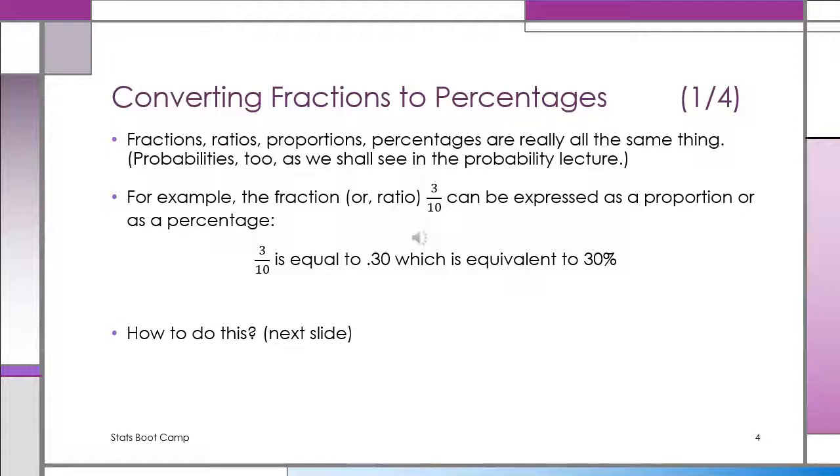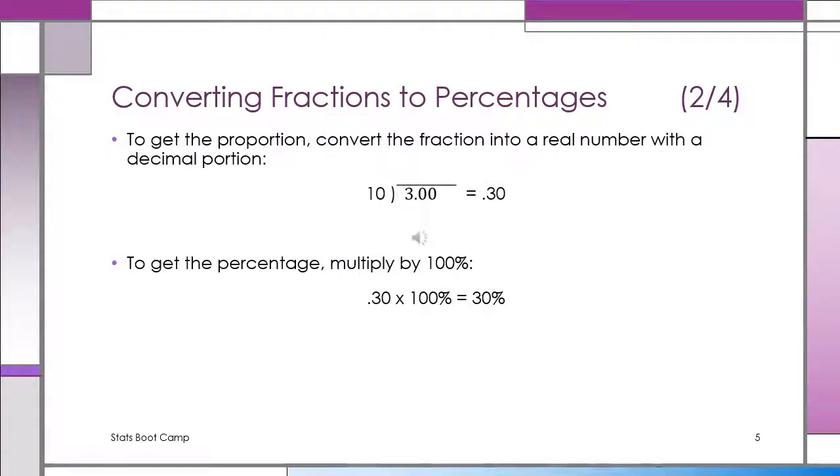In this slide you see that the fraction 3/10 is the same as 0.3, 0.30, and which is also the same as 30%. To get 3/10, just divide 10 into 3, and that equals 0.30. So that's how you get a fraction into a decimal. And now if you want to get it as a percentage, take 0.30 times 100%, you get 30%. So these are all equivalent: 3/10, 0.3, 30%.